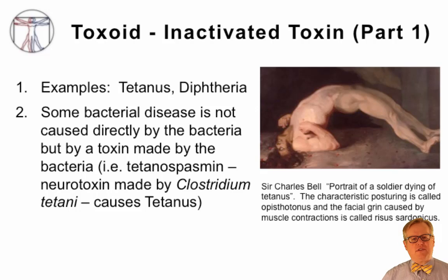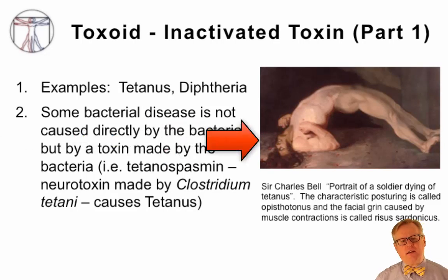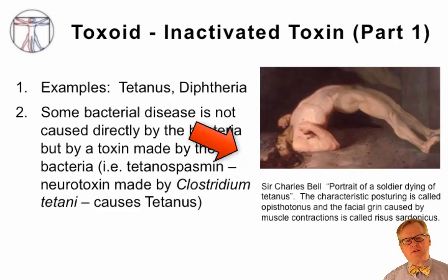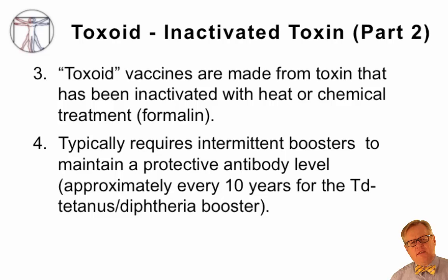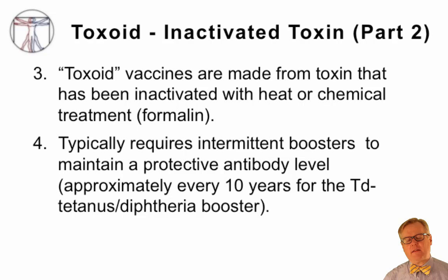A classic painting of a patient dying of tetanus shows the tetany that occurs, including opisthotonus causing arching of the back, and risus sardonicus, the grin caused by contraction of the facial muscles. Toxoid vaccines are made by isolating a large amount of toxin from the organism and inactivating it with heat or chemical treatment such as formalin. These vaccines typically require intermittent boosters; for tetanus, boosters are given approximately every 10 years.